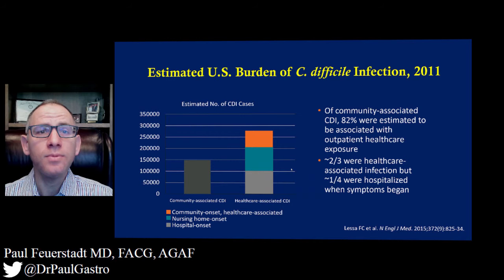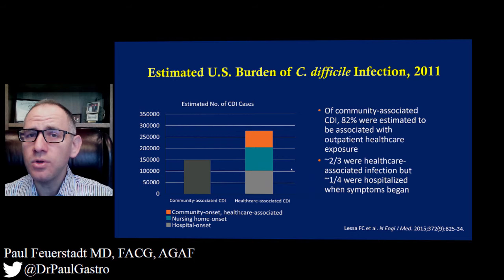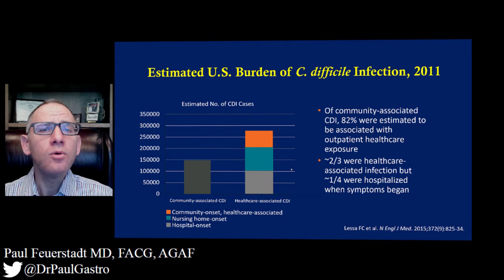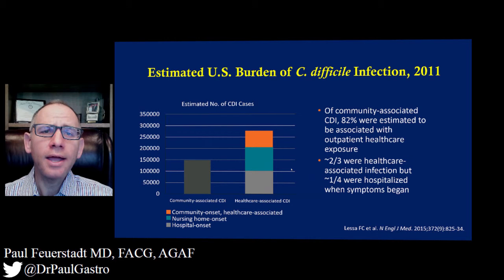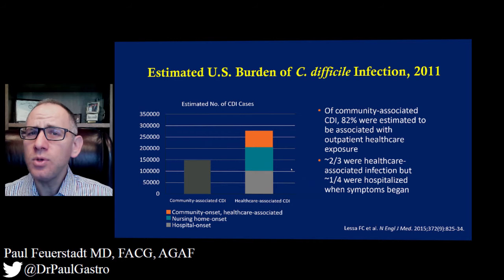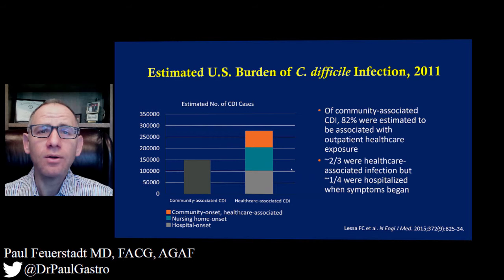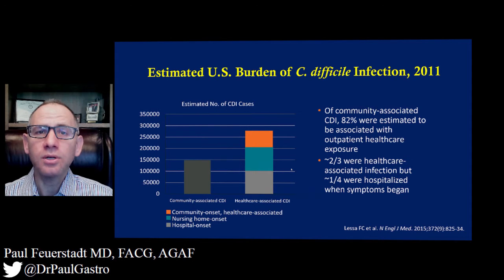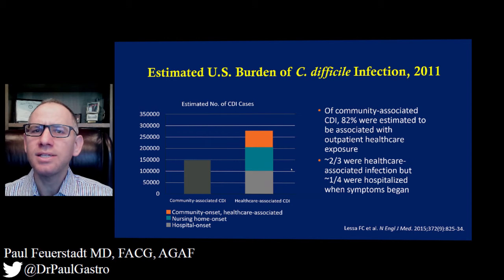Community-associated infection is defined by an individual having the onset of symptoms within the community or within 72 hours of admission to the hospital, with no hospital admission within 12 weeks prior to the onset of symptoms. Of the group that had community-associated infection, 18% had no contact with medical care — they didn't go to a doctor's office or a hospital. It's unclear why so many of those individuals got C. difficile.